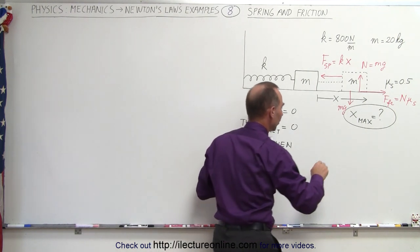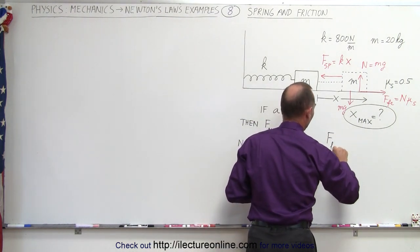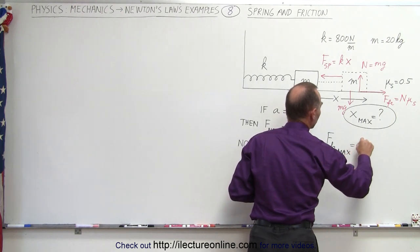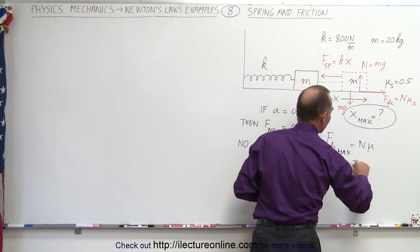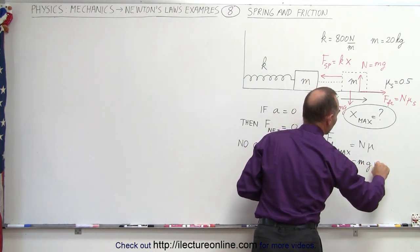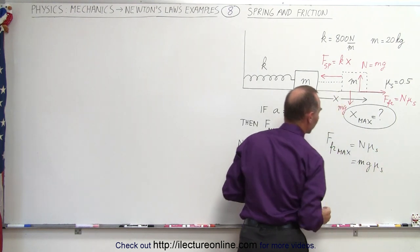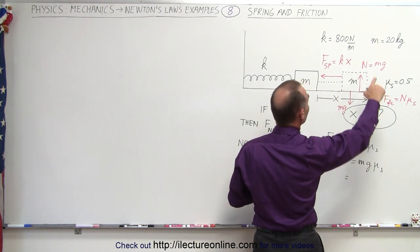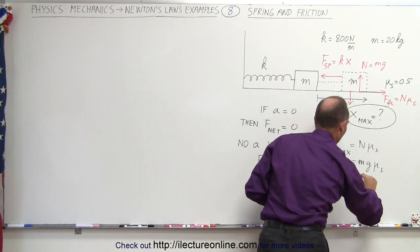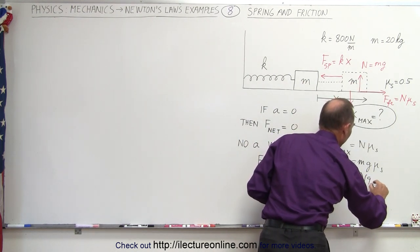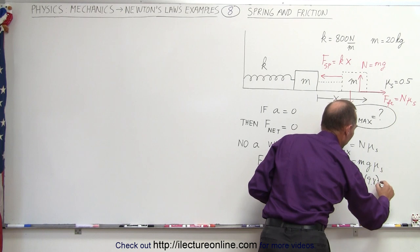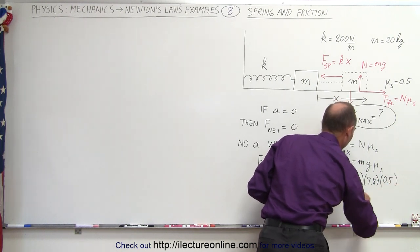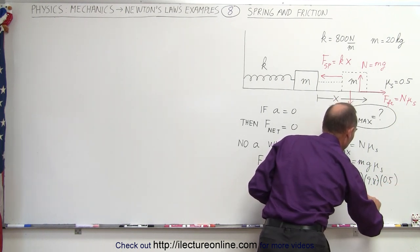The maximum friction force equals the normal force times mu, which equals mg times mu sub s. The mass is 20 kilograms, so: 20 kg × 9.8 m/s² × 0.5 = 98 newtons. That is the maximum the friction force can be.